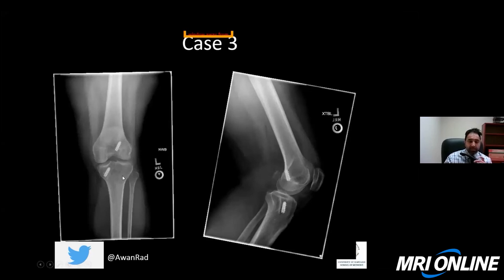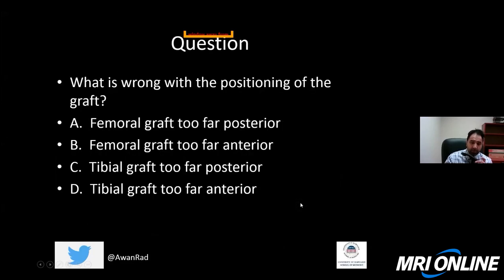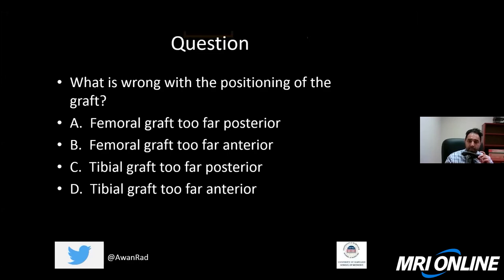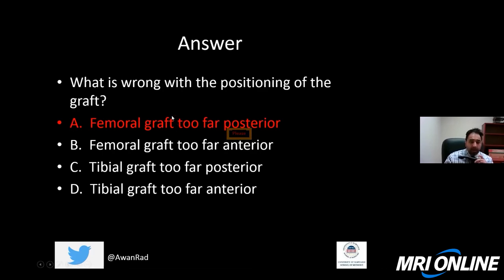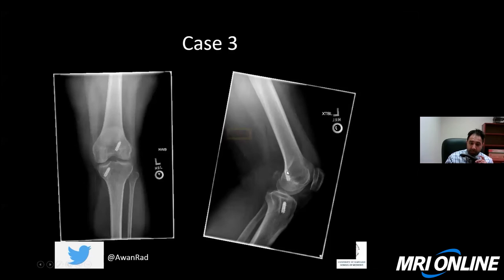Case three: this patient has status post ACL reconstruction with an abnormality on the lateral view. What's wrong with the positioning of the graft? Most people answered A — femoral graft too far posterior — and that's correct. This is a femoral blowout fracture. The femoral tunnel is placed too far posteriorly, resulting in fracturing of the posterior cortex of the distal femoral metaphyseal cortex. It should be placed one or two centimeters more anteriorly.